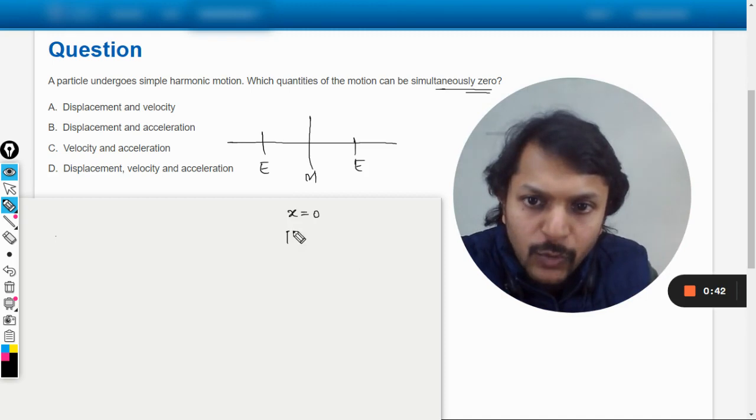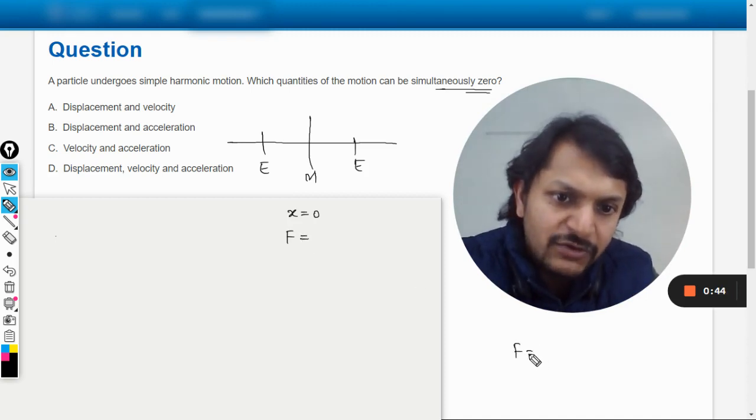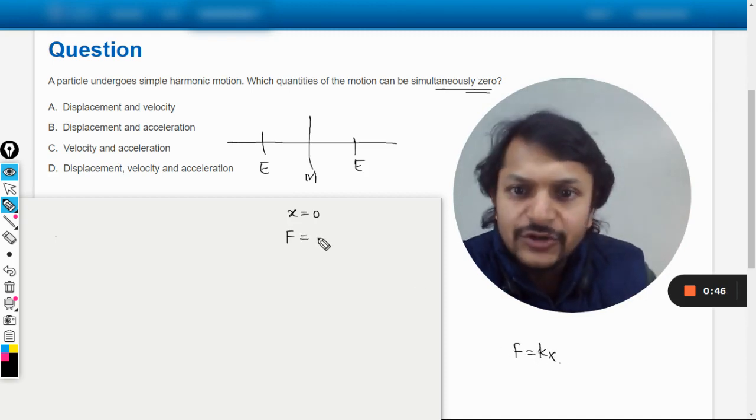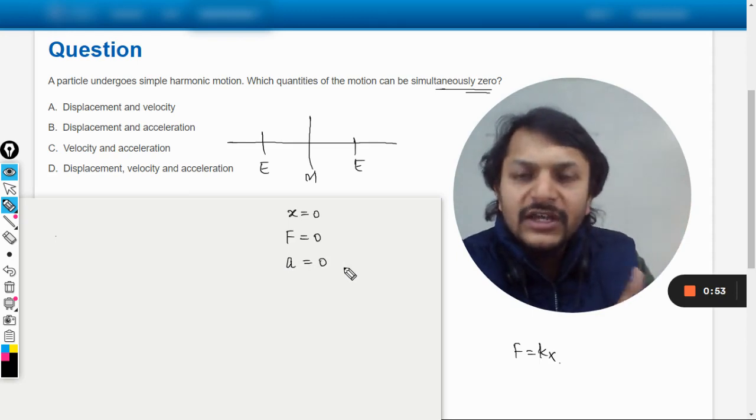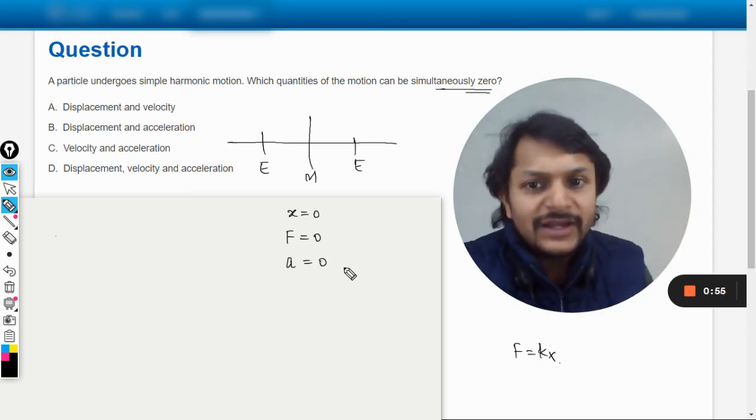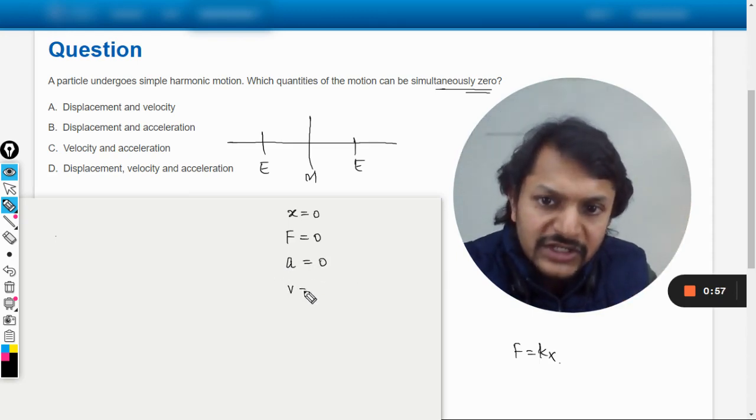When the displacement is zero, according to Hooke's law, what should be the restoring force? F is equal to KX. So if X is zero, the force will be zero. Now if the force is zero, we can say that the acceleration due to the force, that will also be zero. So acceleration is zero.